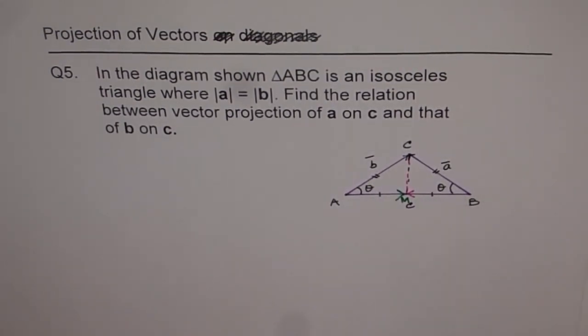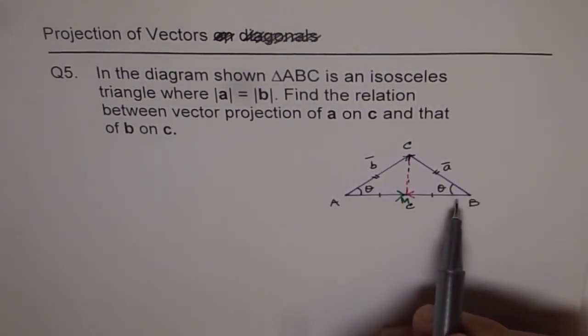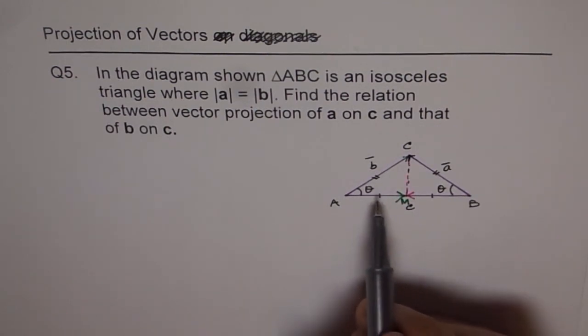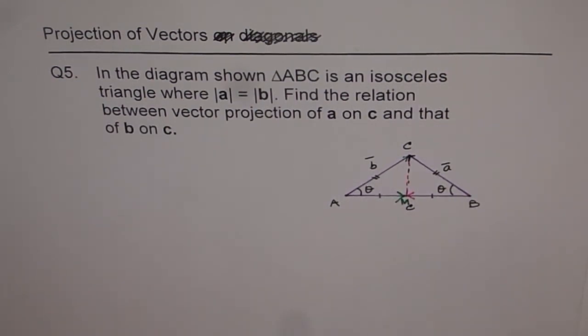They will be of the same magnitude though, since in an isosceles triangle, these angles are equal. So you will get exactly same scalar values, but their directions will be opposite.